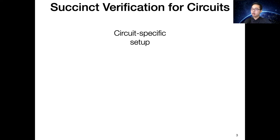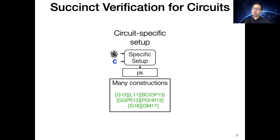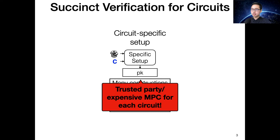There are a couple of ways to preprocess the circuit. The first is to use the circuit-specific setup: a setup algorithm takes randomness and the circuit as input and outputs a proving key. We have seen many constructions in this form, and the most efficient SNARKs are also in this form. But the problem is that to do this circuit-specific setup, you either require a trusted party or an expensive MPC protocol to generate the proving key. This trusted setup needs to be done once per circuit, so it is not scalable, especially when you want to change circuits for different applications.